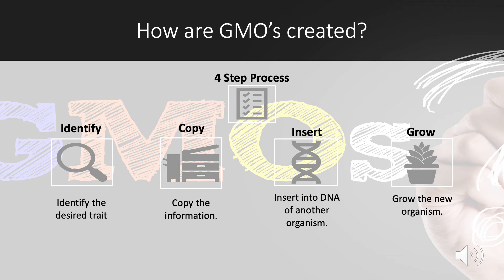Step four, the final step, is grow. Scientists will then grow the new plant or crop in the laboratory to make sure it has adopted the new gene trait successfully. After proven successful, the new modified plants are then grown in test fields. If proven successful again, the modified plant will then be moved to larger fields also to be tested. After another successful test and in-depth review from scientists, the modified crop can finally be sold and grown by farmers.